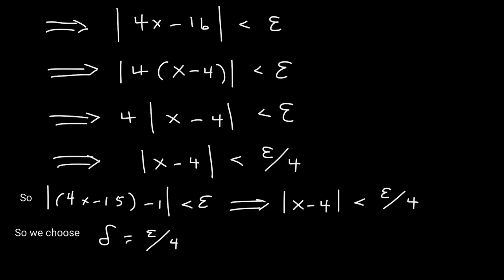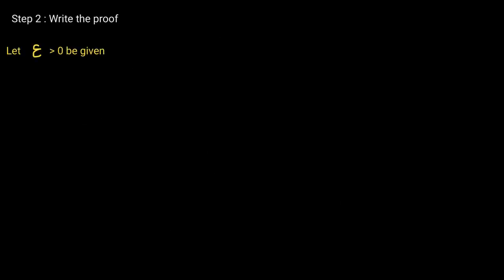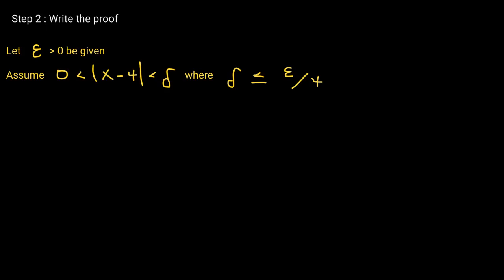We start every proof with: let epsilon greater than 0 be given. We will assume that the distance between x and 4 is less than delta, and we're choosing delta to be less than or equal to epsilon over 4. Our goal is to show that with this choice of delta, the function 4x minus 15 will be less than epsilon units from 1.